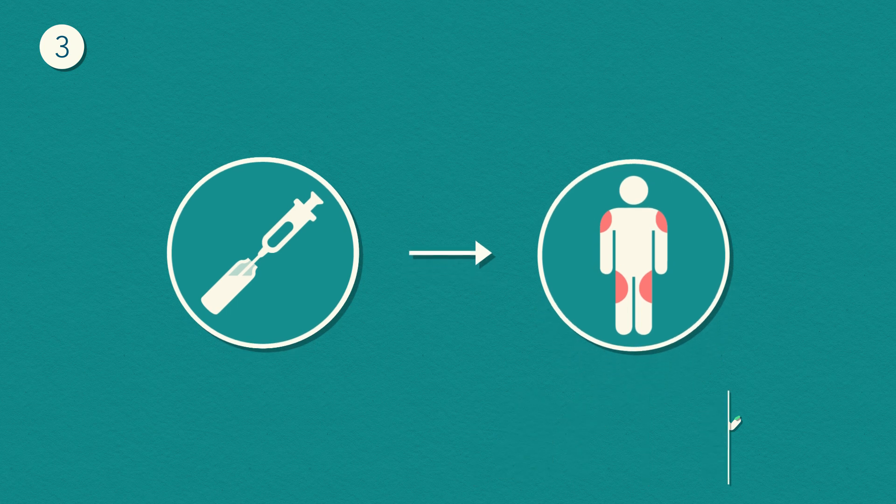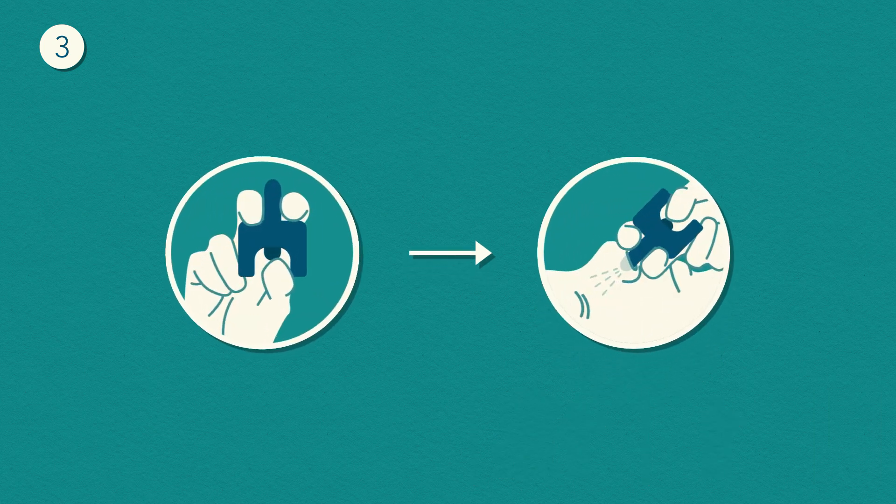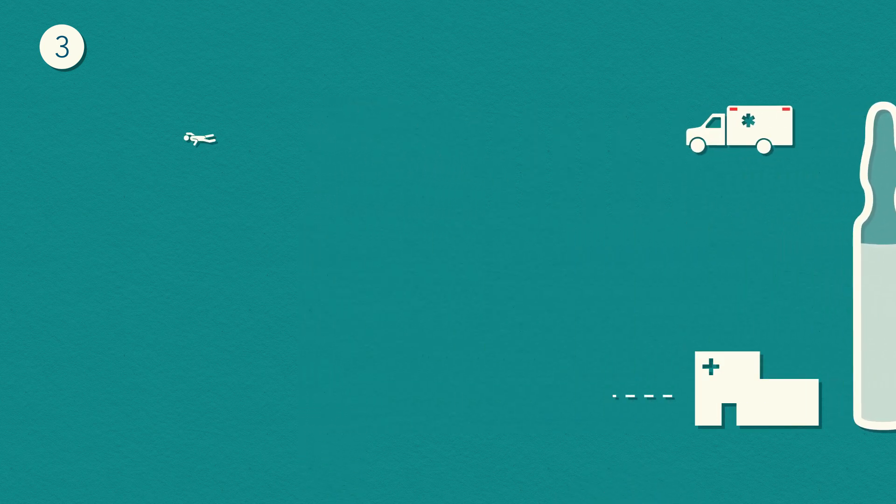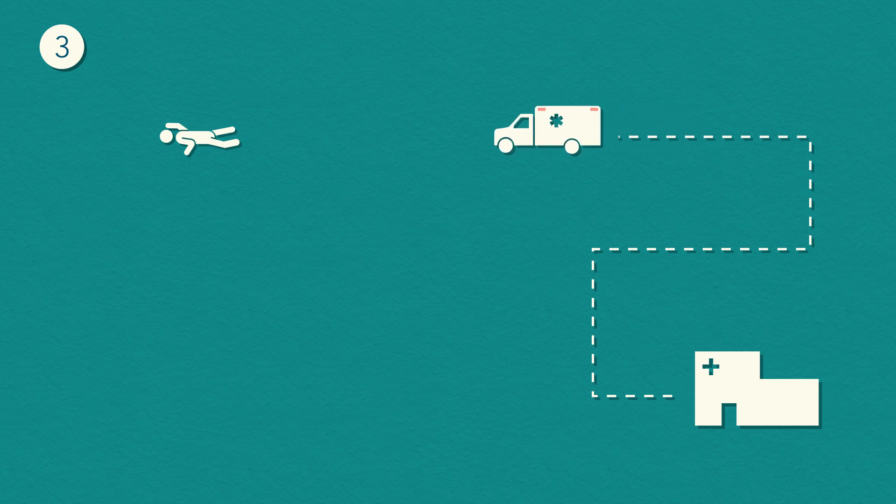Third, naloxone is usually injected into a muscle or sprayed into the nose. Each dose of naloxone lasts for a short time, about 30 minutes. When someone has overdosed, naloxone buys time for a paramedic to arrive and get the person to a hospital.